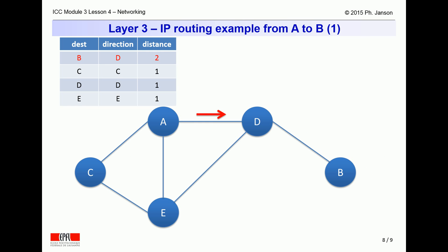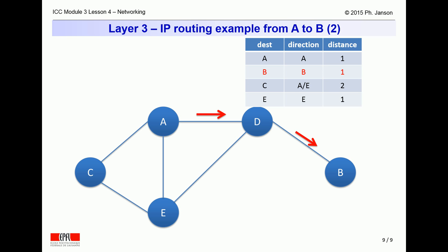Thus, if router A received a packet for B, following its routing table, it would forward that packet onto D. And when D receives that packet, it would forward the packet onto B, which is the final destination of the packet.